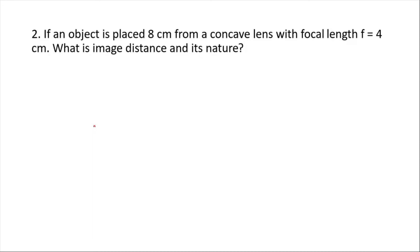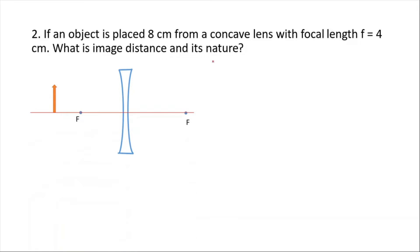If an object is placed 8 centimeters from a concave lens with focal length f = 4 centimeters, what is the image distance and its nature? This is a concave lens with the object placed 8 centimeters from the lens and focal length of 4 centimeters.